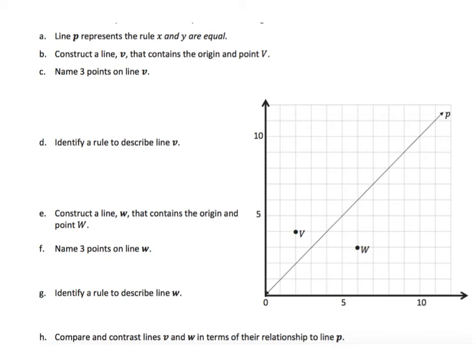For number 3, we have, again, line P to start with, where X and Y are equal. It says construct a line V that contains the origin and the point V. Now, we're not going to be parallel this time. So, let's draw that line in, going through the origin and point V.